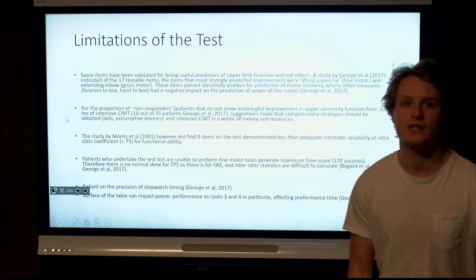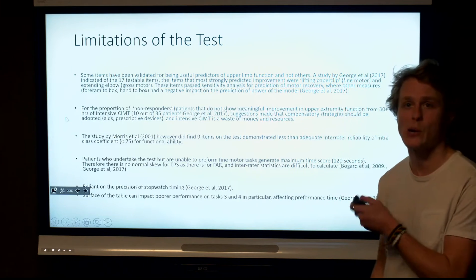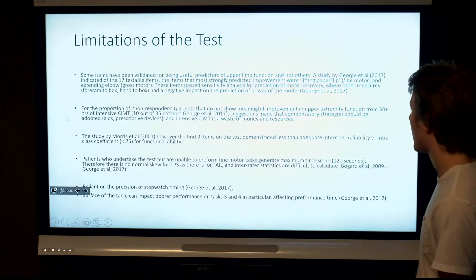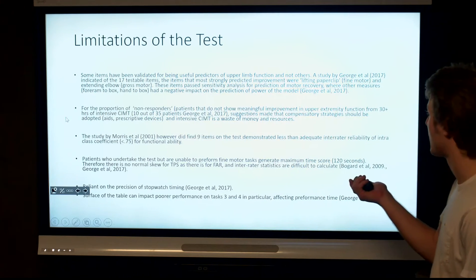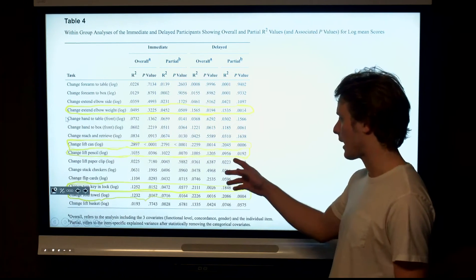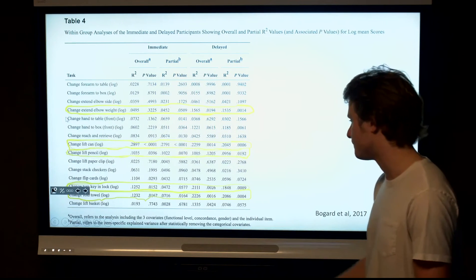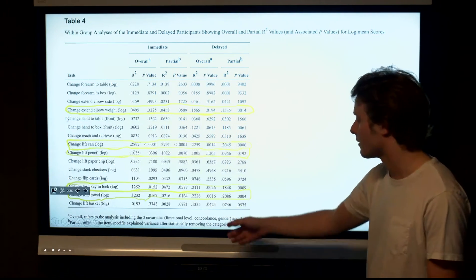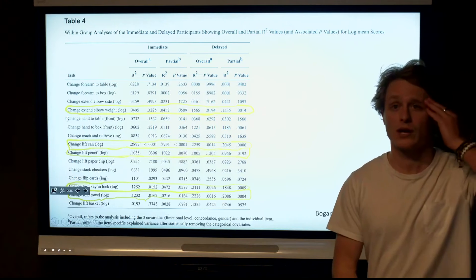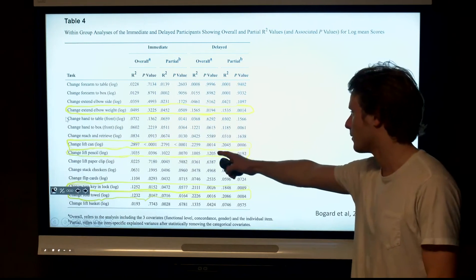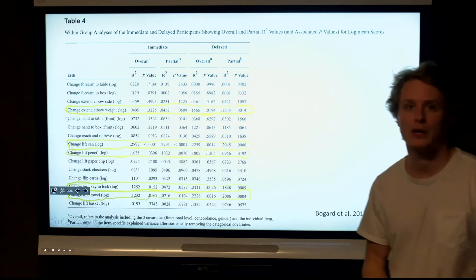The limitations of the test is that some items have been validated as useful predictors for upper limb function and others have not. A study by George and colleagues found that the testable items that involved fine motor movements, including lifting the can, lifting the pencil, turning the key in the lock, and folding the towel, had the strongest correlation values for improved motor performance over time, as we can see here with the second range of p-values there.